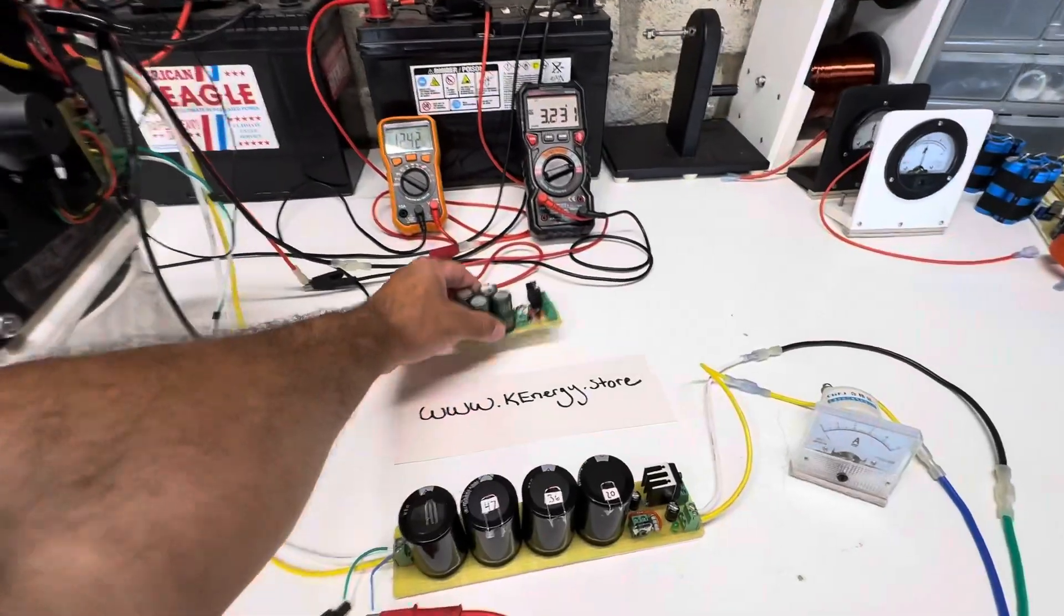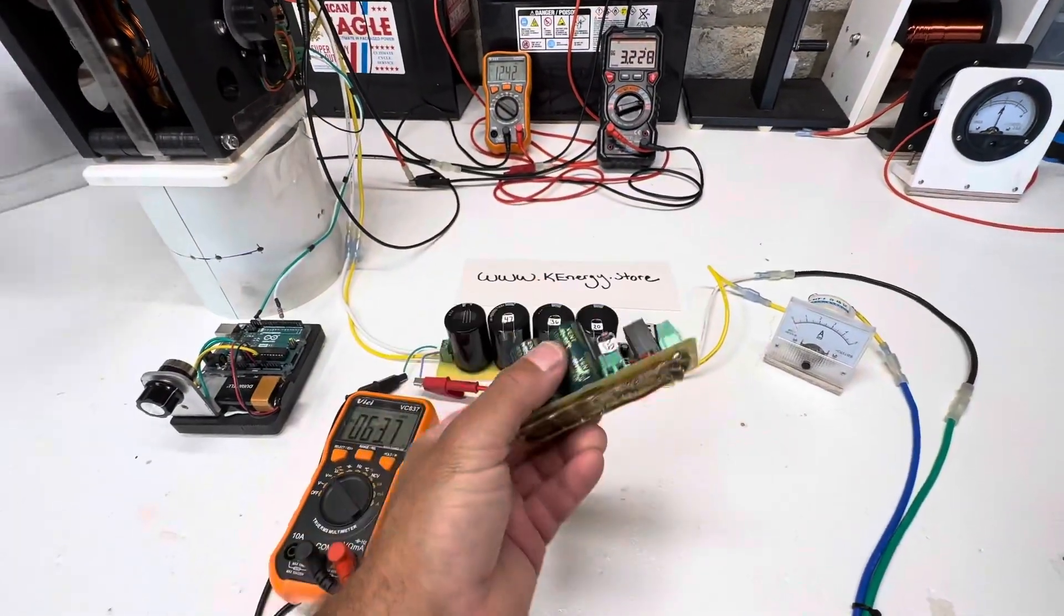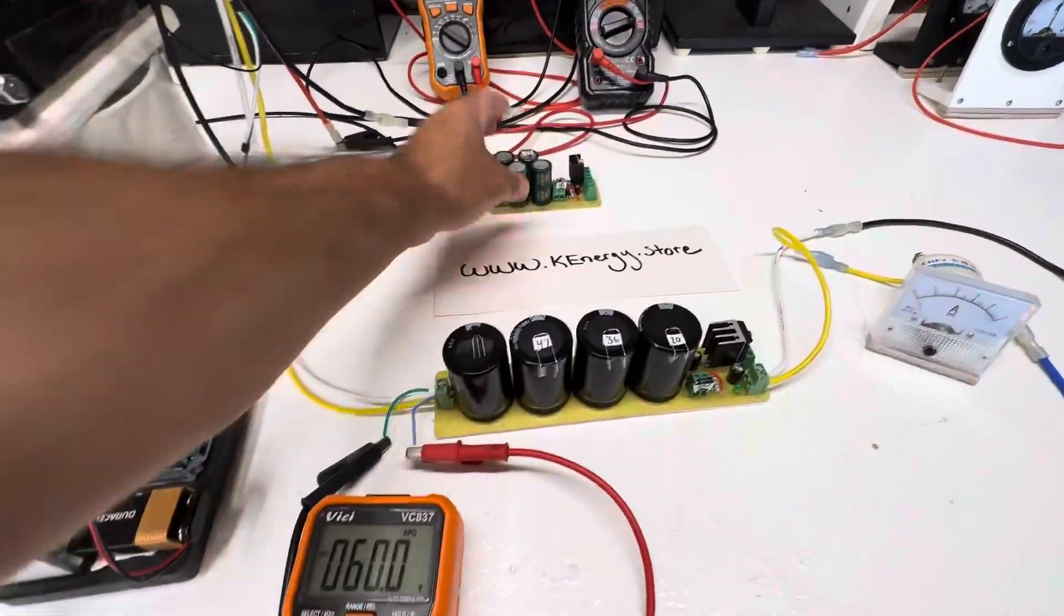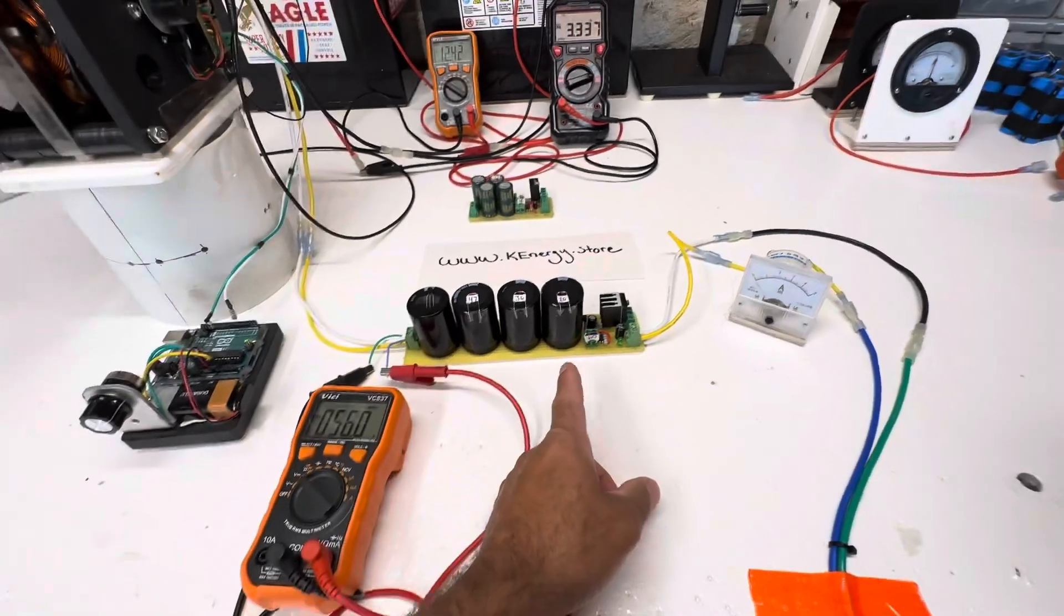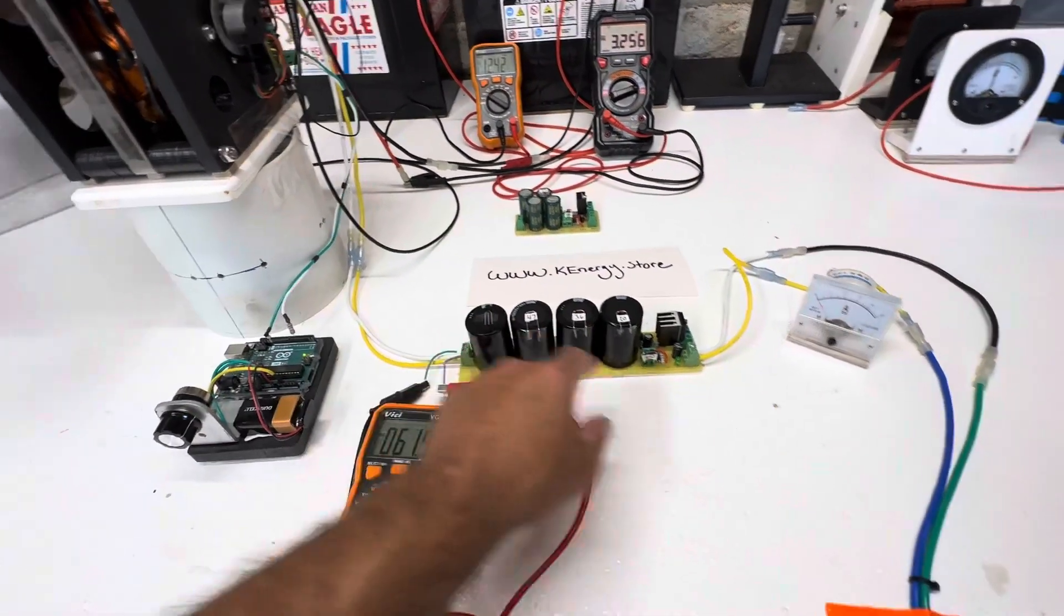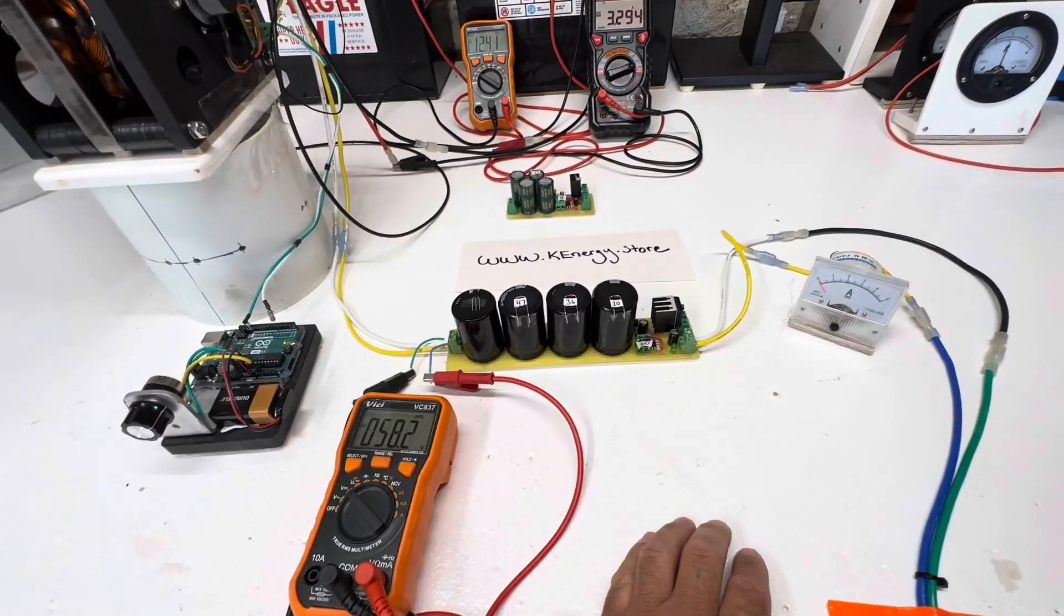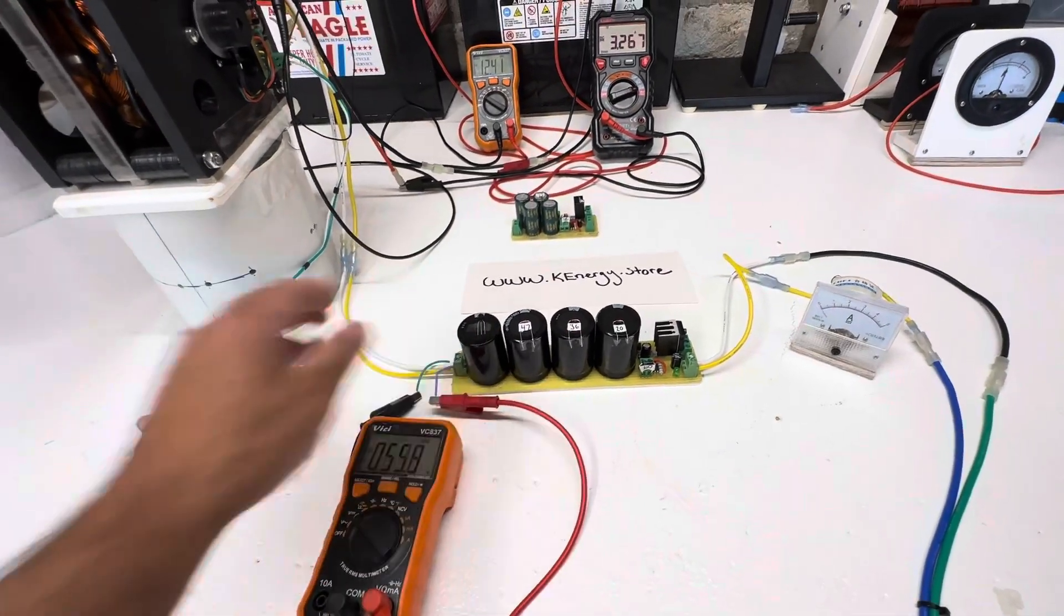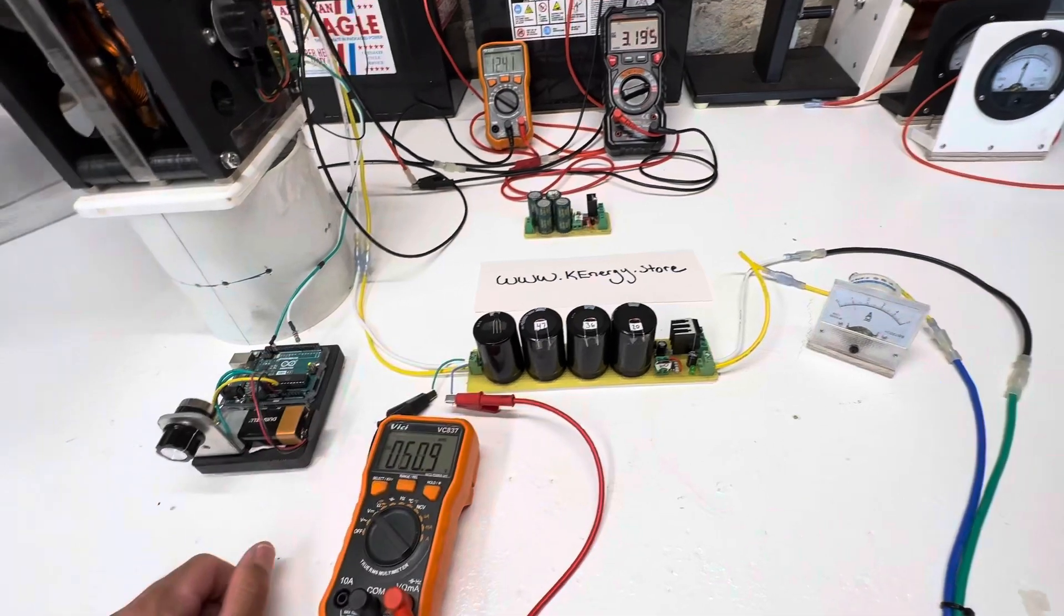This is the smaller version, the 12 volt version. This one can actually do all of it, so you could do 12, 24, 36, and then 60 volts for 48. This is a total of 40,000 microfarads at 100 volts.